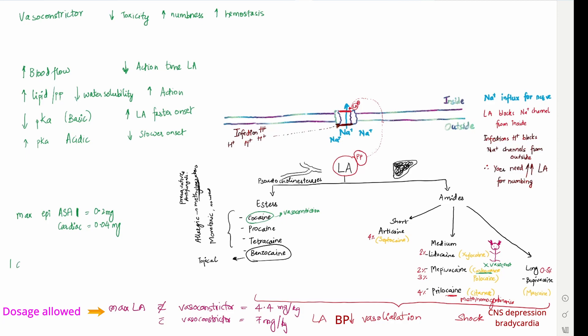Now, one carpule of any local anesthetic has a volume of 1.8 ml. Remember that 2% of lidocaine, one carpule contains approximately 36 mg of lidocaine. You just have to multiply 18. 1% of any LA contains 18 mg. So if you have 3% of mepivacaine, 3% is 18 into 3.